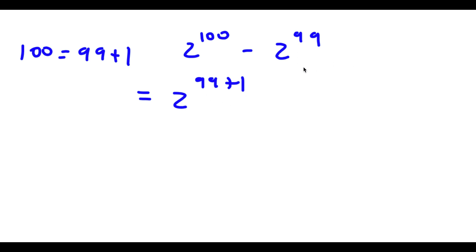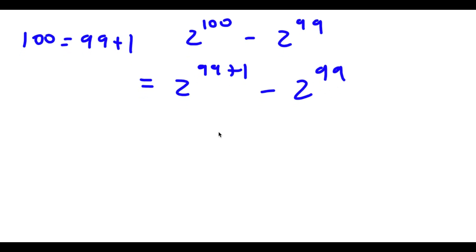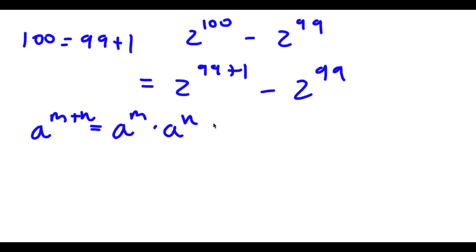So I have 2 to the power of 99 plus 1 minus 2 to the power of 99. Now, if I have something in the form a to the power of m plus n, this is equal to a to the power of m times a to the power of n. So 2 to the power of 99 plus 1 is going to equal 2 to the power of 99 times 2 to the power of 1.